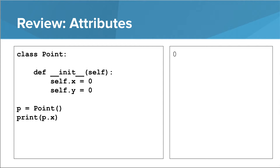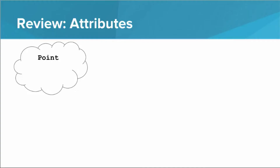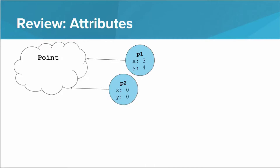We can set those attributes inside the init method. So in this scenario, the point class isn't keeping track of any of its own attributes, but every single instance — for example, p1 and p2 — has their very own x and y, and those x and y attributes can be different from instance to instance.